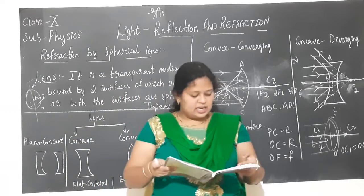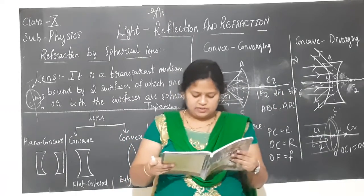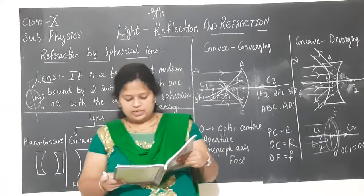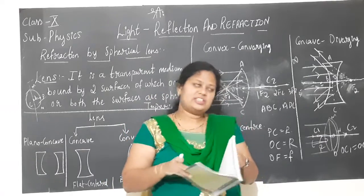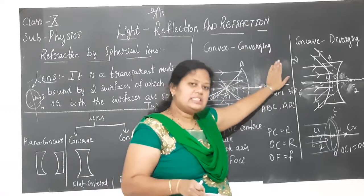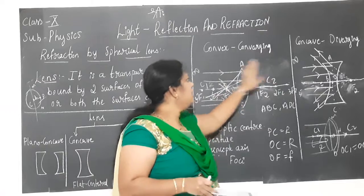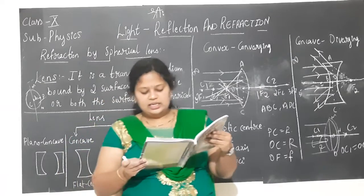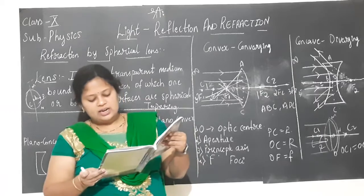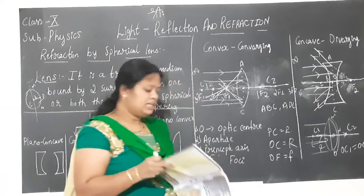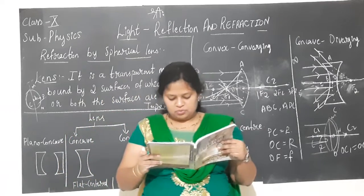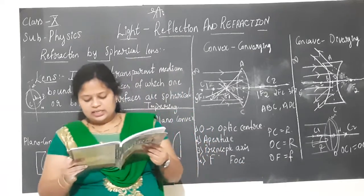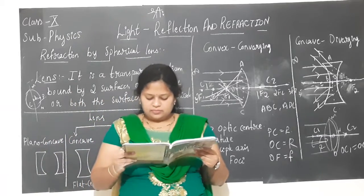If you pass parallel rays from the opposite surface of the lens, you get another principal focus on the opposite side. That is the reason a lens has two principal foci. The letter F is used to represent the principal focus; however, a lens has two principal foci represented by F1 and F2. The distance of the principal focus from the optic centre is called the focal length, represented by small letter F.